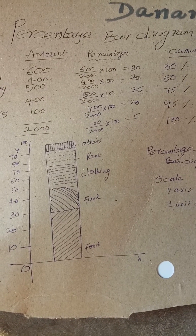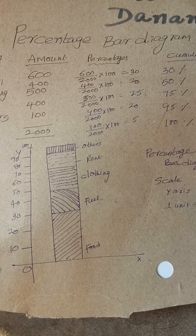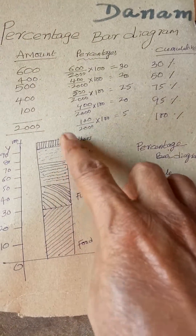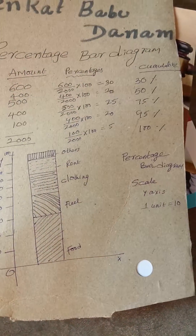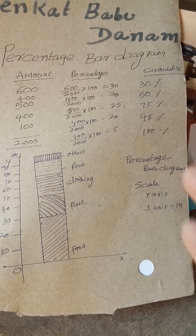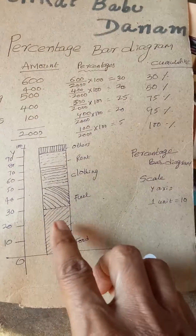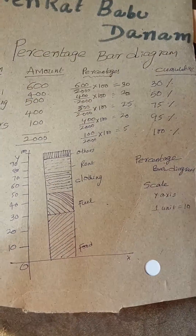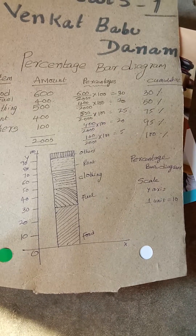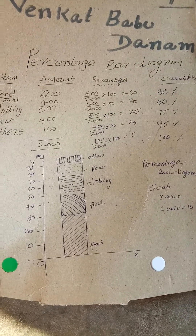You have to show the sections with shades — food, clothing, rent, and others. If you want, you can add the percentage labels here. You can write the percentage in the middle of each section as well.